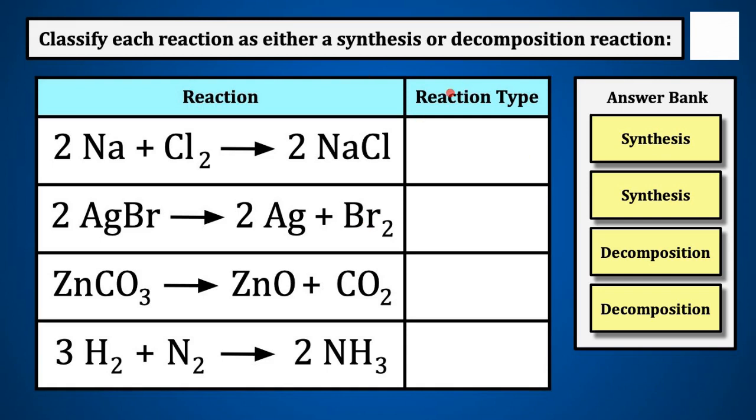So classify these as either synthesis or decomposition. This is our A, this is our B, gives us AB. So that's our synthesis. Here we have, so this is more gives us one, so more equals one.